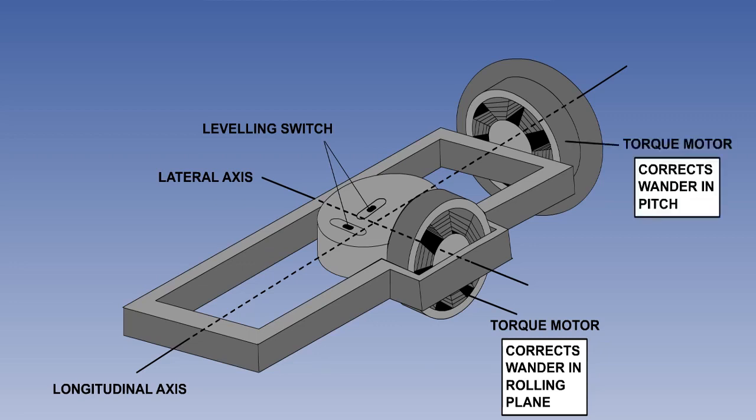Likewise, the pitch torque motor is on the outer gimbal so that the precession is around the lateral axis to correct for pitch. The mercury switch which senses wander of the spin axis in the fore and aft plane has its associated torque motor fixed to the outer gimbal. The mercury switch which senses wander of the spin axis in the lateral plane has its associated torque motor on the inner gimbal.